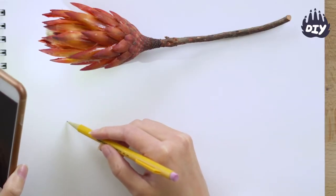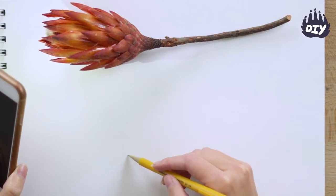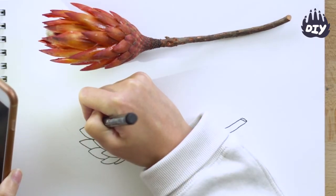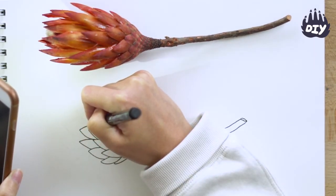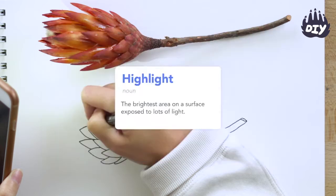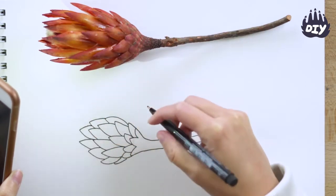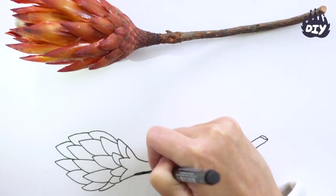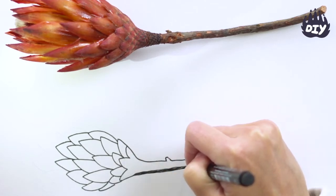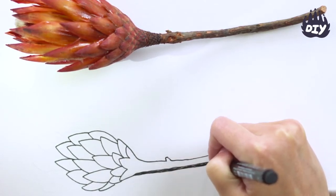Once I get the light to where I want it, I'm going to map out the lightest area and keep that clear of markings, since that's where it's brightest. Then I'll find the darkest area and map that out as well, and this time I'm going to shade it in pretty dark.